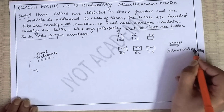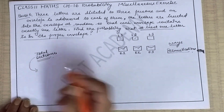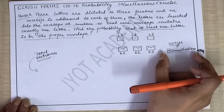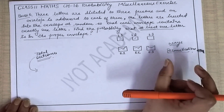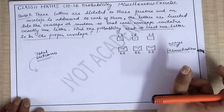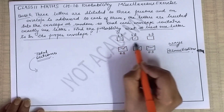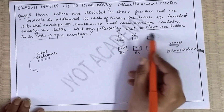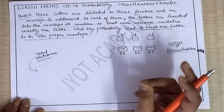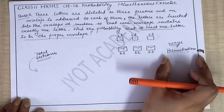We will use permutation to find our total outcomes. We have three letters that can be arranged in three envelopes, which we find using permutation from Chapter 7. These three letters in three envelopes can be arranged using permutation.